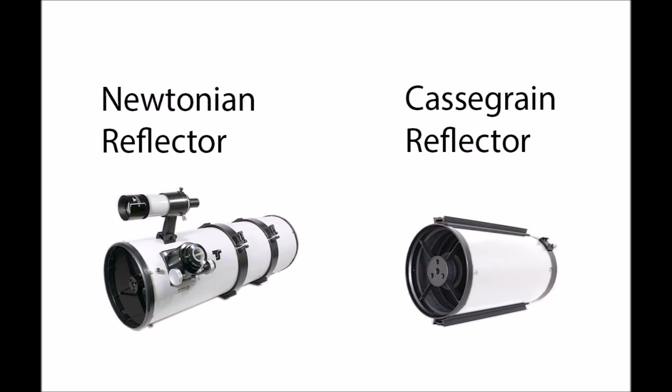Reflectors, on the other hand, come in a number of different configurations. First, we have the Newtonian type of reflector, which was the first type of reflector made. This has a mirror at the back of the telescope, which bounces the light into a secondary mirror, which splits it off to the side. And you have the camera or the eyepiece hanging out from the side of the telescope.